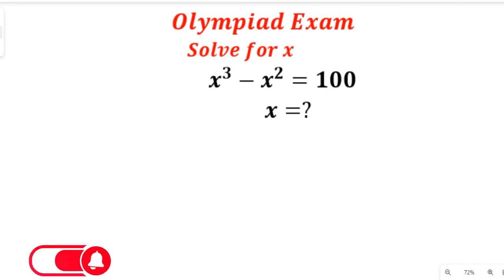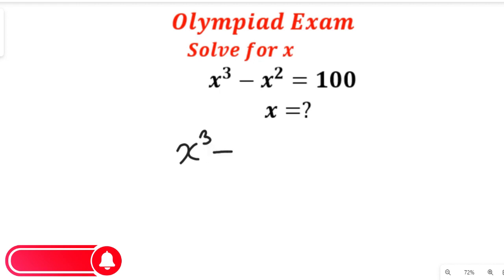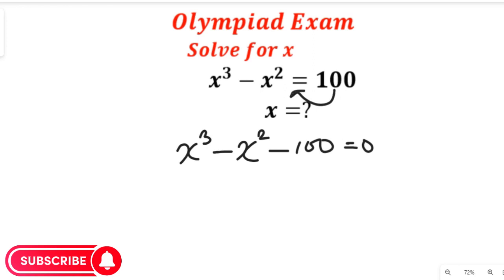If we simplify this equation, we'll have x to the power of 3 minus x to the power of 2, and that will be equal to minus 100, which will be equal to zero — remember, 100 comes to the other side and the negative becomes positive. Now we're going to simplify this by using 125: negative 125 plus positive 25 will give us negative 100, so we're going to replace this with that.